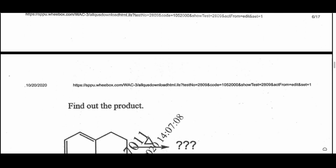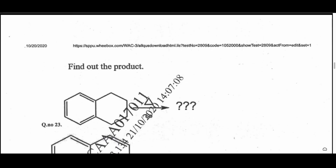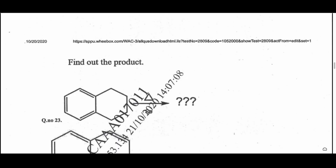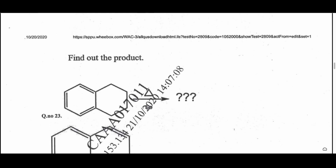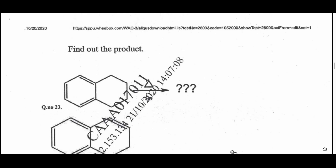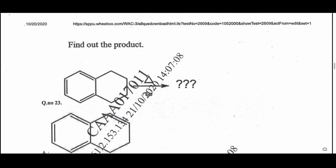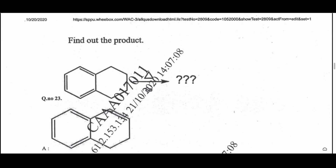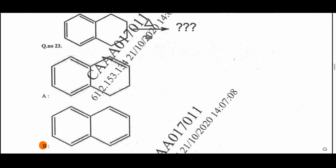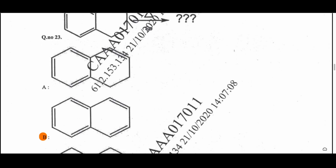Question 23: Find the product of the given reaction. In this reaction there is an aromatization process — upon heating, a dehydrogenation reaction occurs. The starting material is tetrahydronaphthalene, and when it is heated with selenium it gives naphthalene. That is option B.